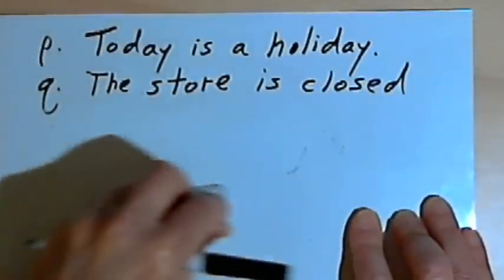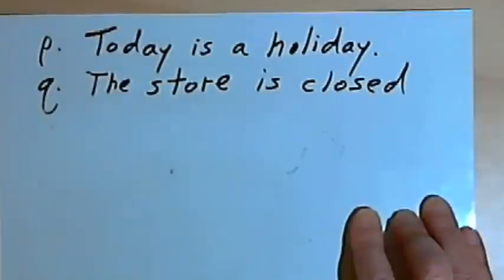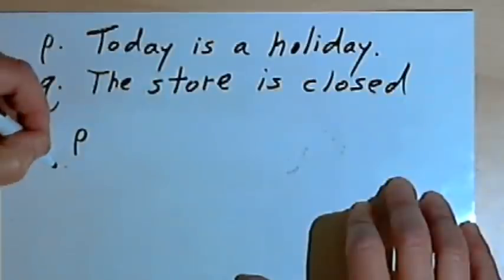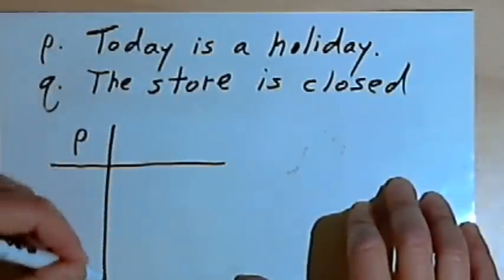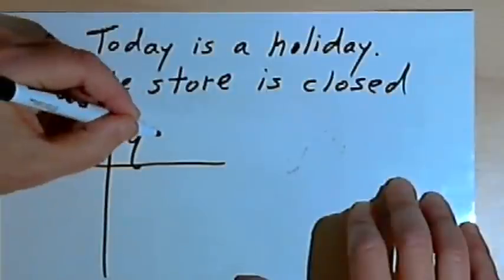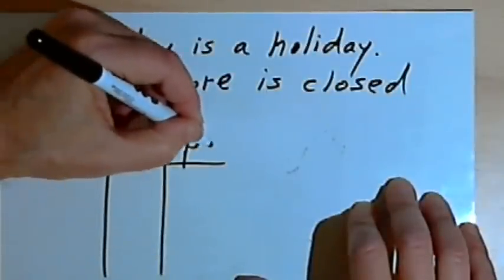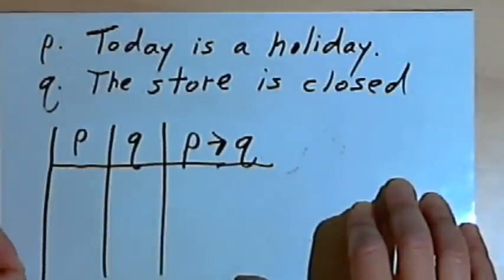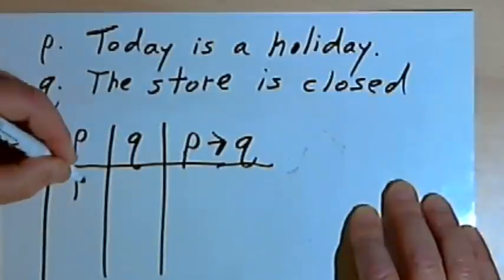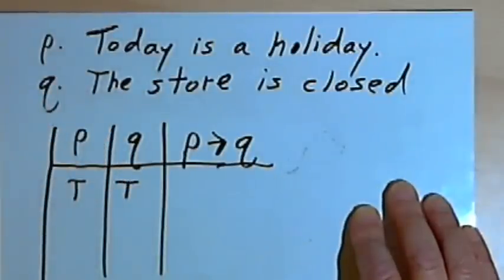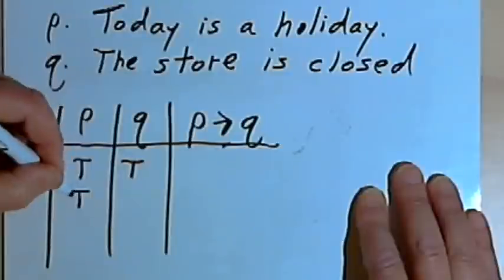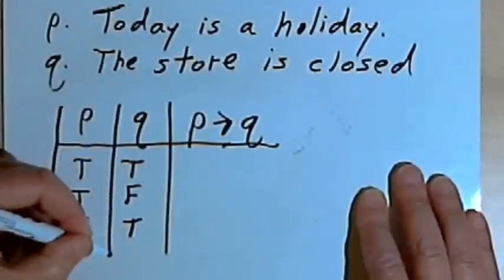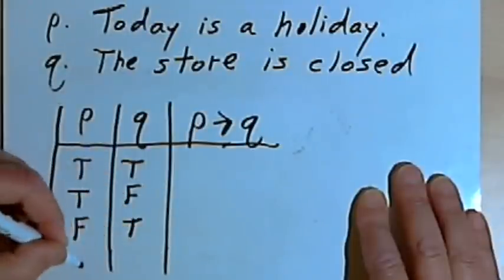Now let's find out what the truth table for a conditional statement looks like. I'm going to need a column for the truth values of P, another column for Q, and a third column for 'if P, then Q.' The possible values are: P and Q both true, P true and Q false, P false and Q true, or both false.